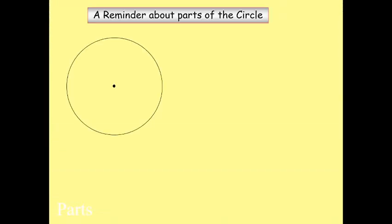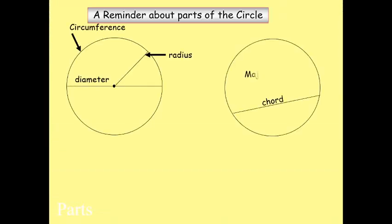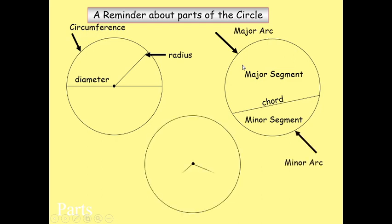And just to get your language right, a couple more points we need to make sure is that if I've got a chord and my two things are split up into segments, the big one's called your major segment, the other one's called your minor segment. The same thing applies for minor sector and major sector - just helps when we verbalize and talk about our circle theorems.